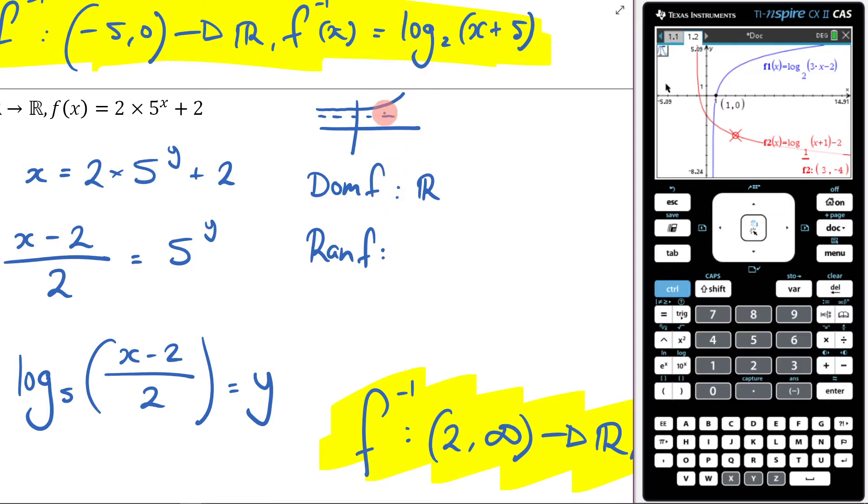My range is going to be what? Well, it's going to be 2 to infinity, because this is y equals 2. So it's 2 up, 2 to infinity, not including 2.